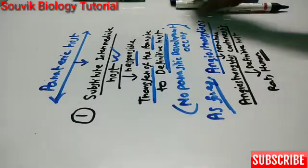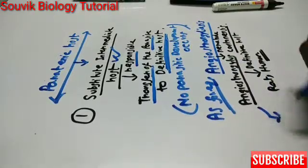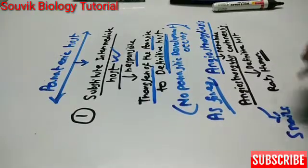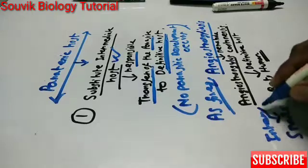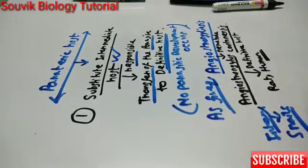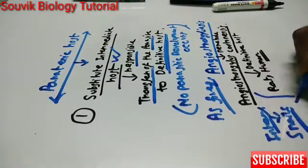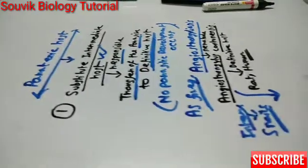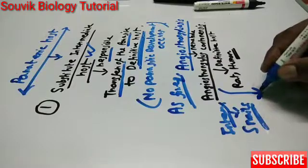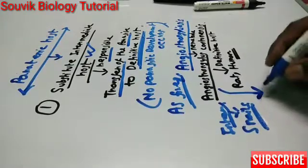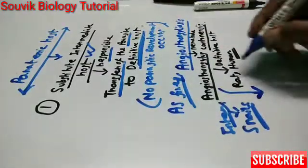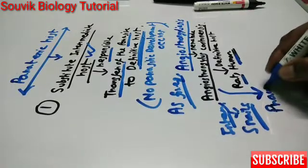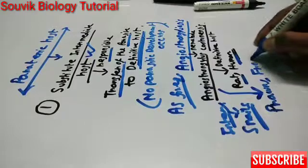The intermediate host is mainly the mollusk, such as snails. And the paratenic host — because sometimes they are also responsible for transferring the parasite to the definitive host such as human and rat — includes prawns, frogs, and crabs.